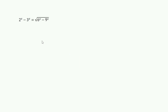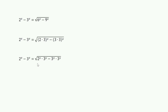we start with rearranging the equation. That is, 2 raised to x minus 3 raised to x equals square root of (2 × 3) whole raised to x minus (3 × 3) whole raised to x, which is equal to square root of 2 raised to x into 3 raised to x minus 3 raised to x into 3 raised to x.